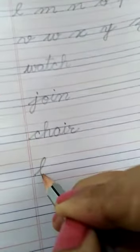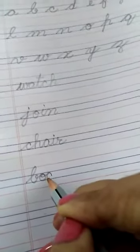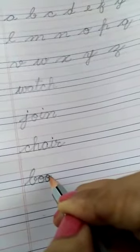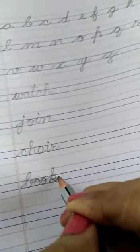Book. B-O... Watch it carefully. How am I writing O? B-O-O-K. Book.